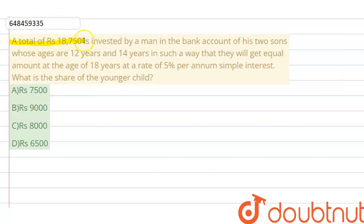A total of Rs. 18,750 is invested by a man in the bank account of his two sons whose ages are 12 years and 14 years in such a way that they will get equal amount at the age of 18 years at a rate of 5% per annum simple interest. What is the share of the younger child?